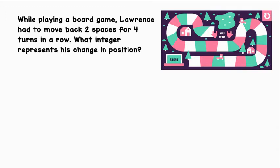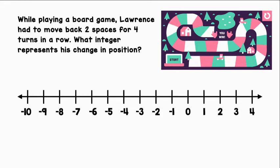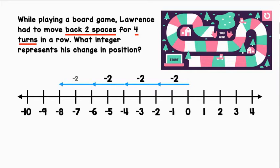Let's use a horizontal number line to represent this situation. He moved back two spaces for four turns. So let's start at zero and move back two spaces. This represents the first turn, the second turn, the third turn, and the fourth turn. We end up at negative eight.